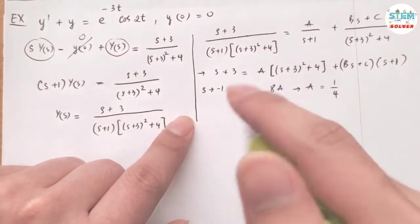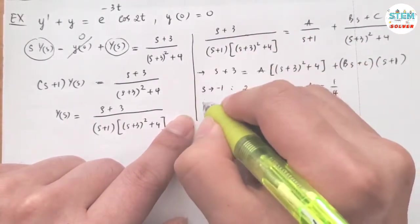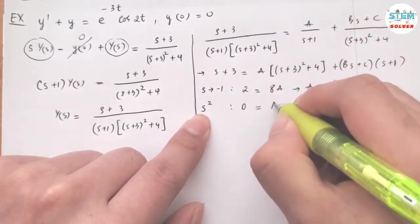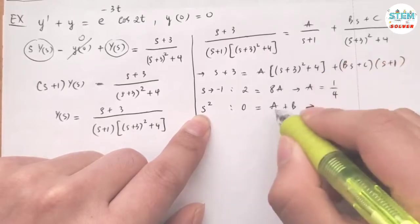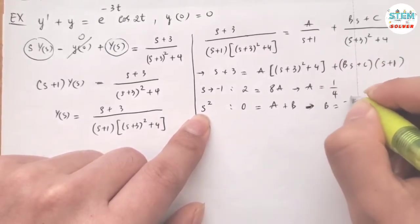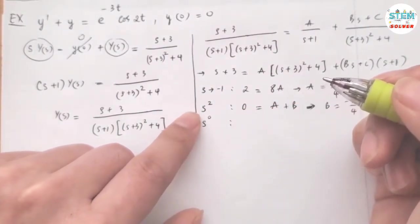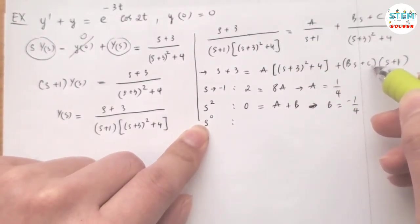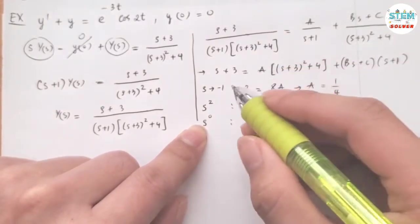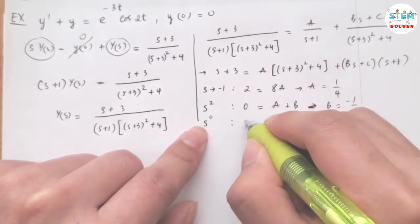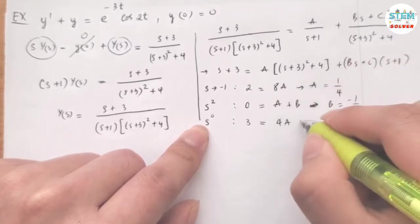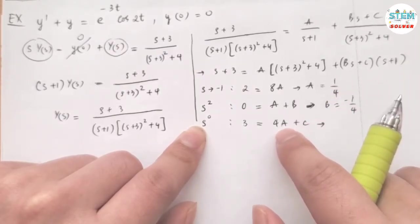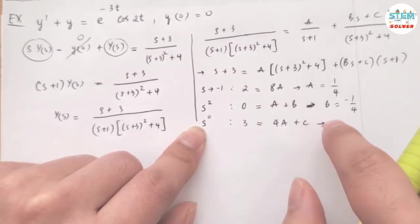There are no more factors to use for limits, so we equate coefficients. Looking at the leading coefficient of s squared: on the left side we have zero, on the right side we have A plus B. Since A equals 1 fourth, B must equal negative 1 fourth. For the constant term s to the zero: on the left we have 3, and on the right we have 13A plus C.